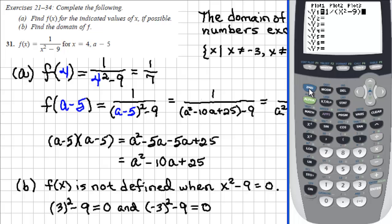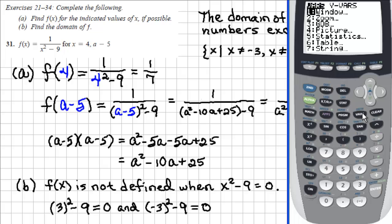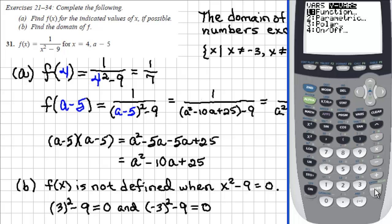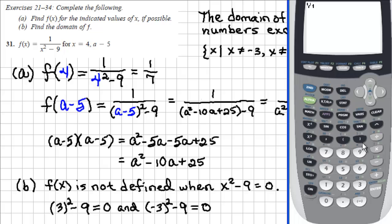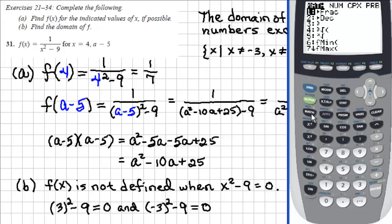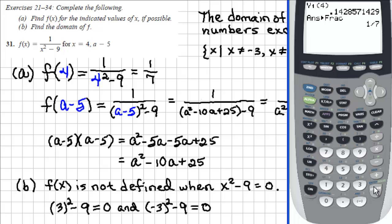Now go to the home screen by pressing 2nd and then mode. On our calculator the name of our function is y1 rather than f. To evaluate f of 4, go to variables, move over to y variables using the right arrow key, select function and then y1. Enter y1 of 4 with parentheses and press enter. It gives a decimal value. To convert to a fraction, go to the math menu, select option 1 to convert to fraction, press enter, and it gives us the fraction 1 seventh, which matches our first answer in part a.